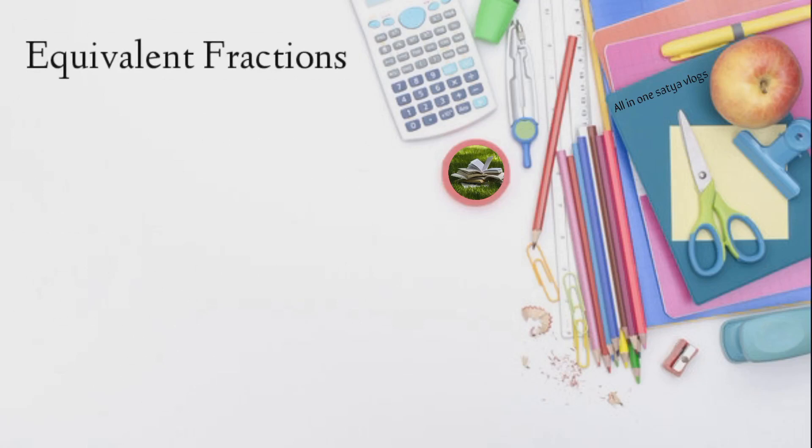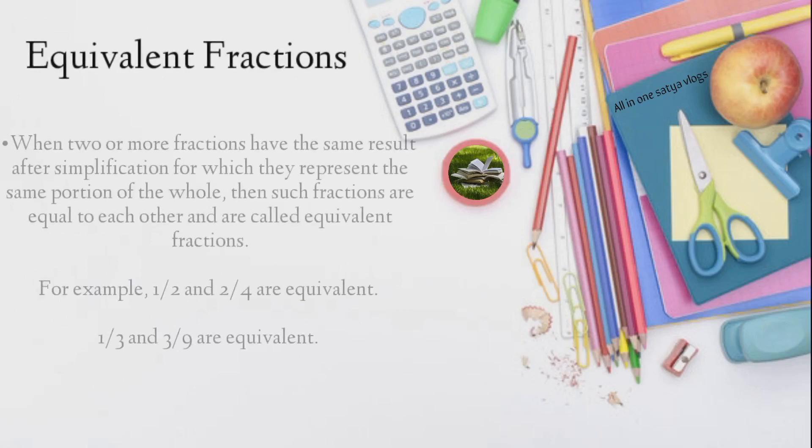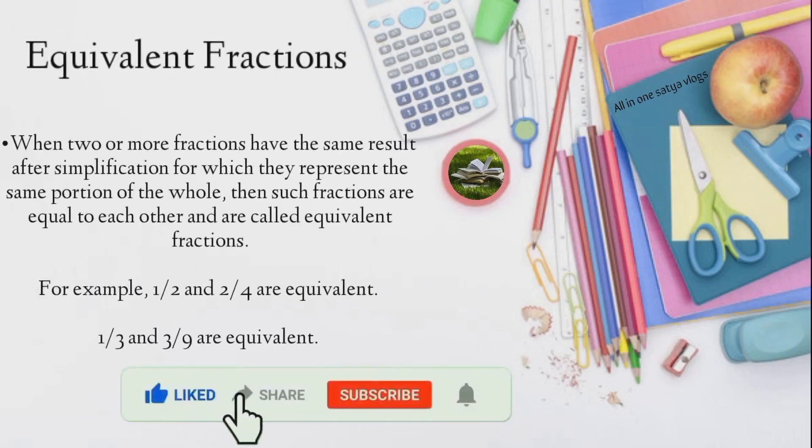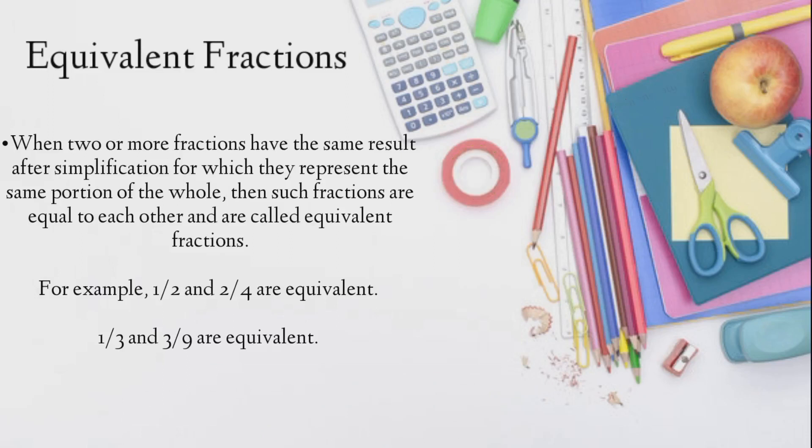Equivalent fractions. When two or more fractions have the same result after simplification for which they represent the same portion of the whole, then such fractions are equal to each other and are called equivalent fractions. For example, 1/2 and 2/4 are equivalent. 1/3 and 3/9 are equivalent.